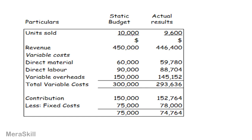This is the static budget. We budgeted for 10,000 units and expected revenue of 450,000 at a rate of 45 dollars per unit. Material, labour, and overheads were the other costs as per budget. Revenue of 450,000 less variable costs of 300,000 gives a contribution. Revenue minus variable cost is called contribution. Less fixed cost, you get your budgeted profit.